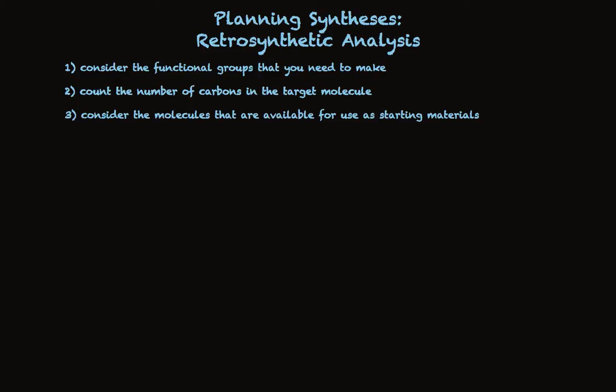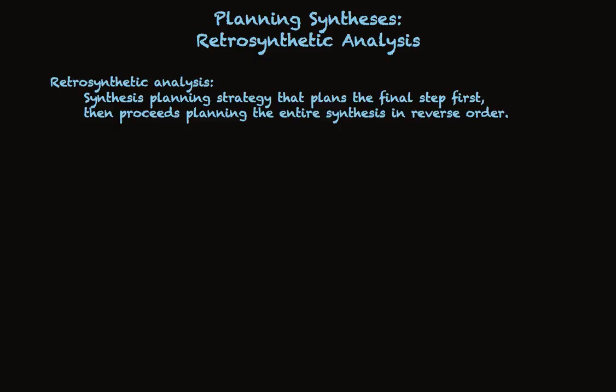Beyond those three steps, which are important to do at the very beginning, there's an approach to the actual rational design of a synthesis called retrosynthetic analysis. This approach involves planning the very last step first — what precursor could be used to make the target molecule in a single step? Once you identify that precursor, your next question is: what precursor would let me make that precursor? You proceed to plan the synthesis in the exact opposite order it will be carried out in the laboratory. This strategy ensures you're always planning steps that can be done and will lead to the target molecule.